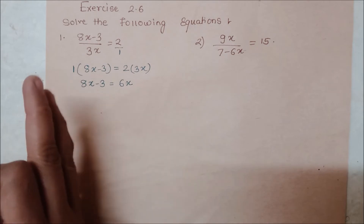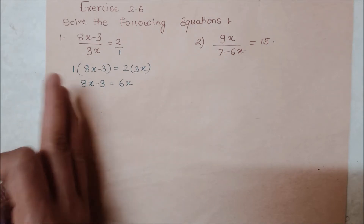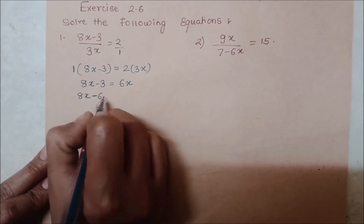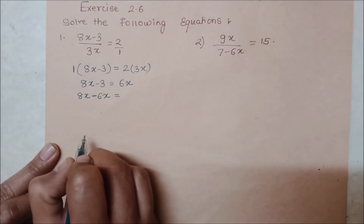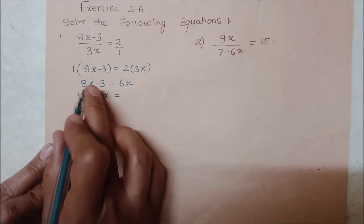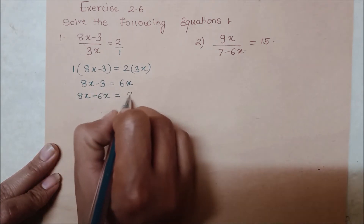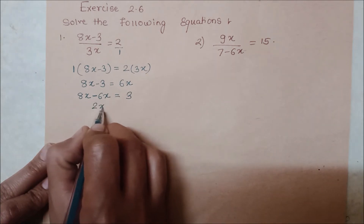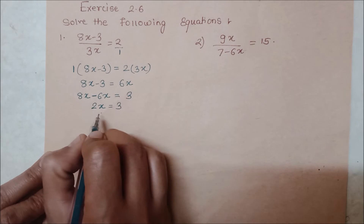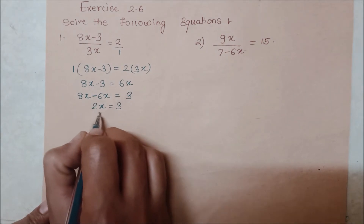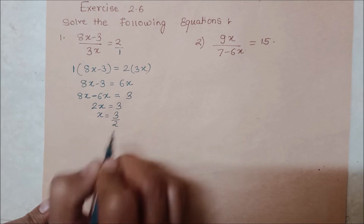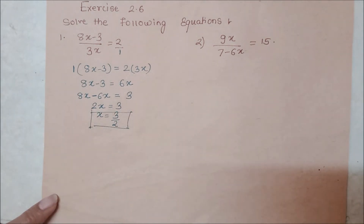Ab humein kya karna hai — variable wali term ko ek taraf laana hai, constant term ko doosri taraf rakhna hai. Toh 8x yahan rahega, 6x udhar plus mein tha, idhar aayega toh minus 6x ho jayega. Aur yah minus 3 jo constant tha, udhar jayega toh plus 3 ho jayega. Ab 8x minus 6x, toh 2x bachhega, is equal to 3. x ki value find out karni hai toh x = 3 by 2.